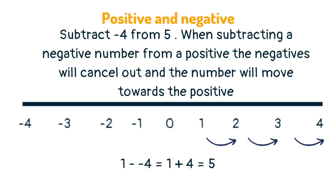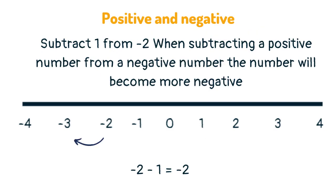When subtracting a negative number from a positive, the negatives will cancel out and the number will move towards the positive. When subtracting a positive number from a negative number, the number will become more negative.